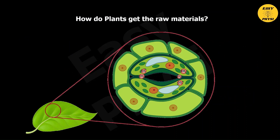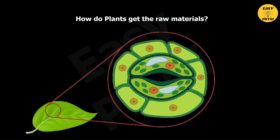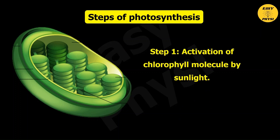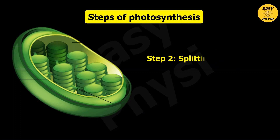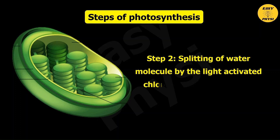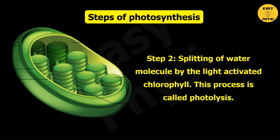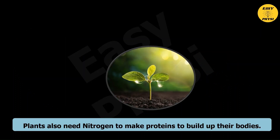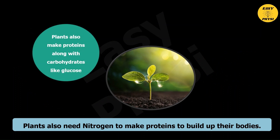Plants get their raw materials through the following means: Carbon dioxide is obtained through stomata, which are the tiny pores present on the underside of the leaf. The steps of photosynthesis are: Step 1 is activation of the chlorophyll molecule by sunlight. Step 2 is splitting of the water molecule by the light-activated chlorophyll — this process is called photolysis. Step 3 is where carbon dioxide reacts with hydrogen produced in step 2 and forms glucose. Plants also need nitrogen to make proteins to build up their bodies.